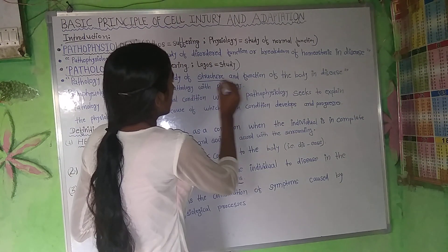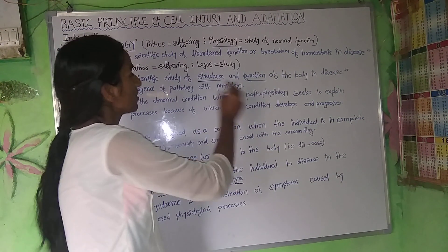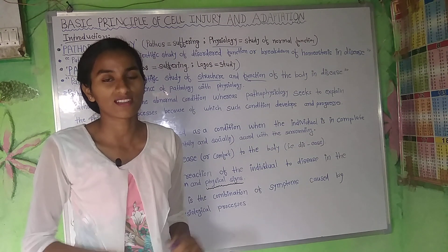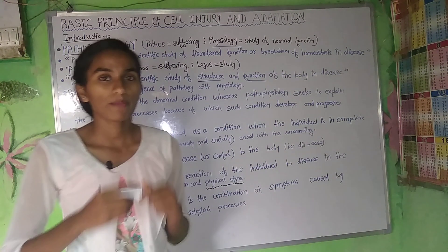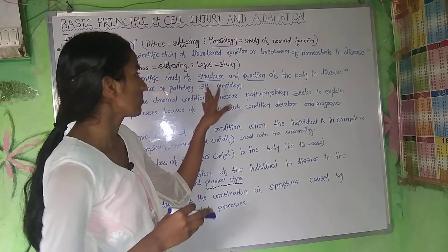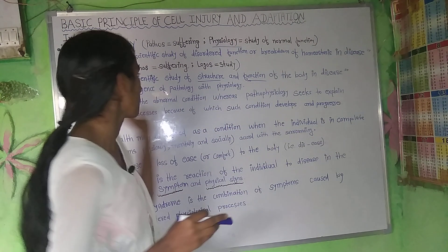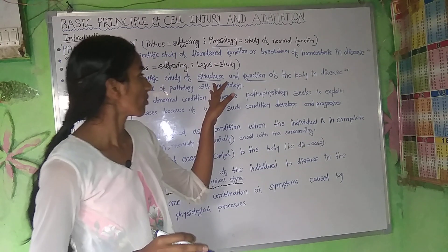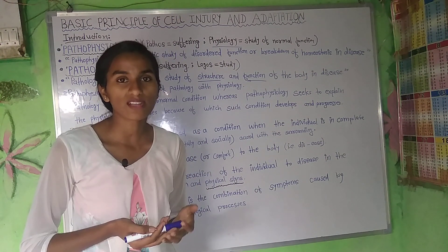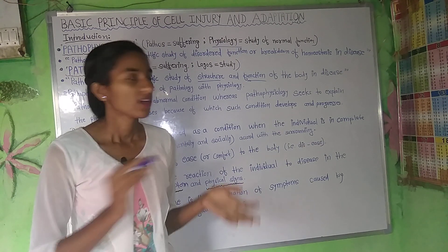These two words — structure and function — are important. We study physiology; we study anatomy and physiology in normal conditions. When the body is in a disease condition, we study anatomy and physiology under pathology. Structure is studied at the cellular level through histology and anatomy. The external structure is anatomy, and at the cellular level it is histology.